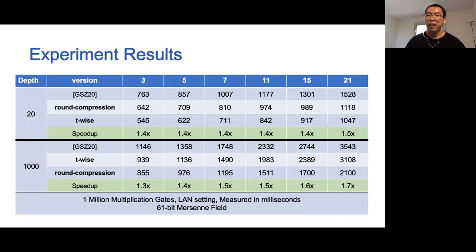We test our two constructions and compare them with the previously best known result, GSC20. Our experiment generates a random circuit with one million multiplication gates, set up in the LAN setting using a 61-bit Mersenne field. The numbers in the table are reported running times in milliseconds. The experiment shows that when using the proper variant, our protocol is about 1.4 times faster than GSC20. When the circuit depth is shallow, for example depth 20, our t-wise independence variant is better. When the circuit is deep, our round compression variant performs better than our t-wise independence variant. In practice, we can choose the proper variant based on the circuit depth.